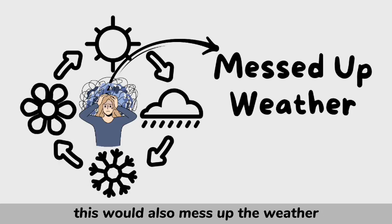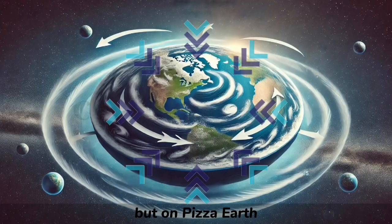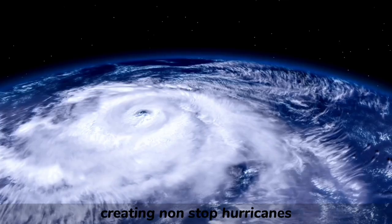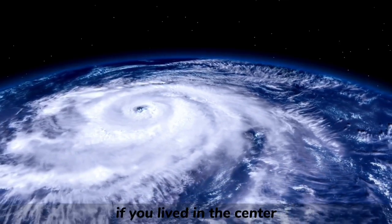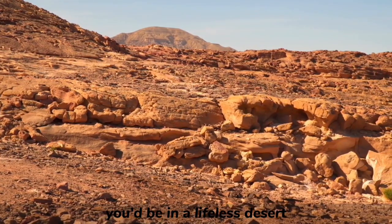This would also mess up the weather. On round Earth, winds move in patterns based on the Coriolis effect. But on pizza Earth, all winds would be sucked toward the middle, creating nonstop hurricanes. If you lived in the center, you'd be in a permanent storm. If you lived near the edge, you'd be in a lifeless desert.